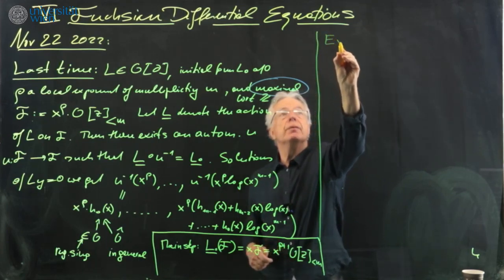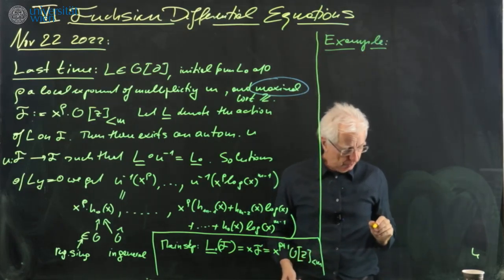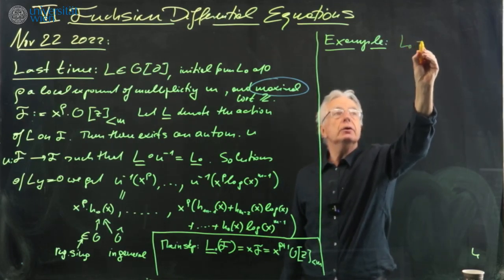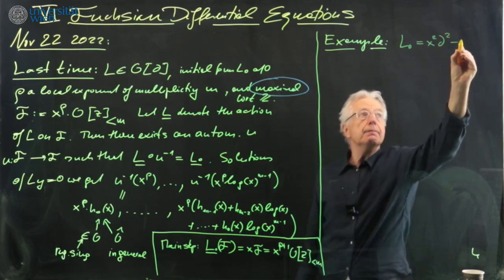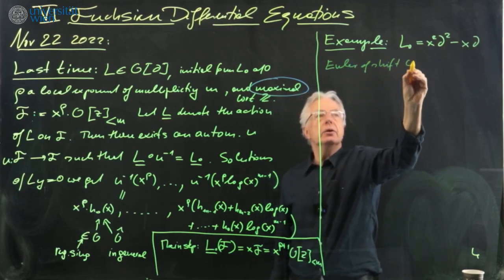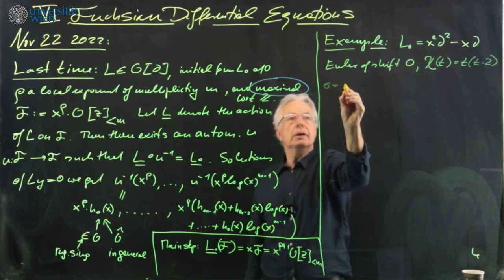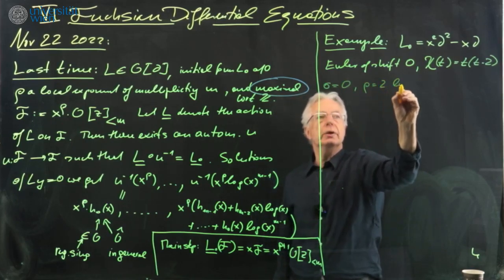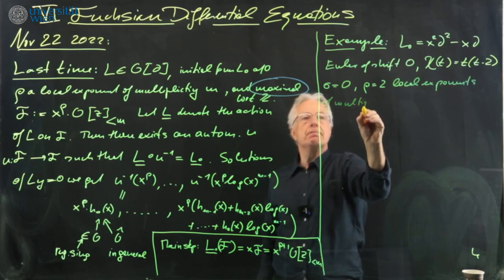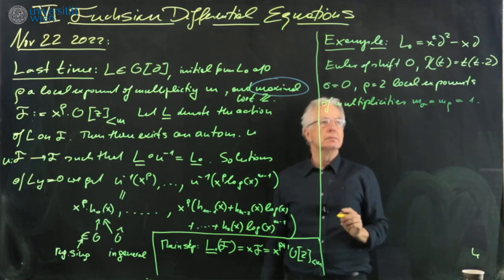Let's start with the following example. We take an Euler operator: L0 = x²∂² − x∂. This is an Euler operator of shift 0. The indicial polynomial χ(t) = t(t−2), and we get local exponents σ = 0, ρ = 2, each of multiplicities M_σ = M_ρ = 1.